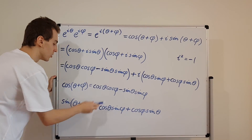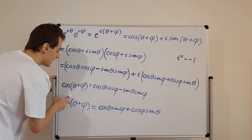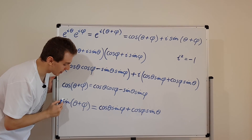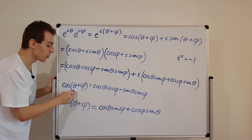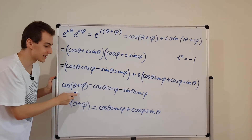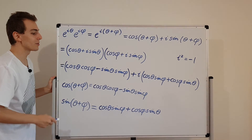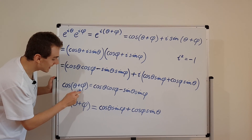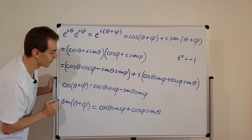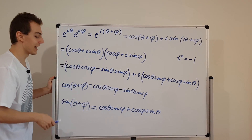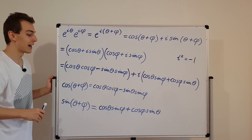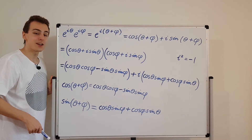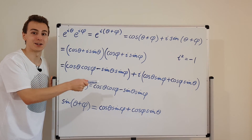One thing to notice: if we set these two angles equal to each other, then we're going to have double the angle inside — that's what we'll talk about in the next video. What happens when theta equals phi? Make sure you watch the next video to find out.